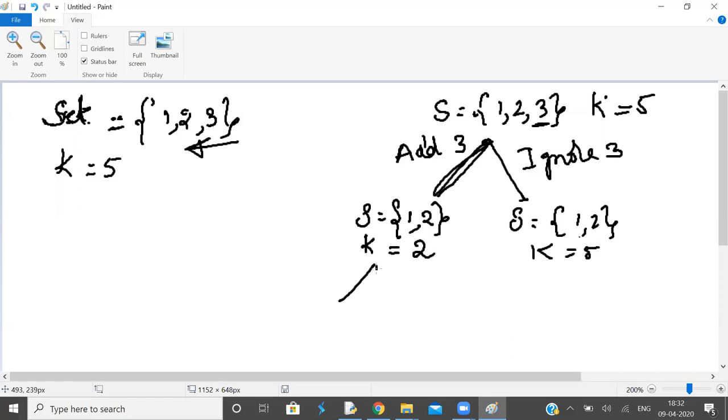Let us explore the second case. Add 2, and the other option is ignore 2. If you add 2, the set contains only one element and k is zero. If you ignore, the set contains one element and k remains 2.